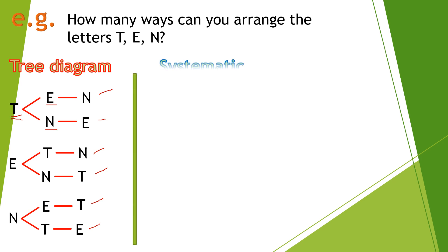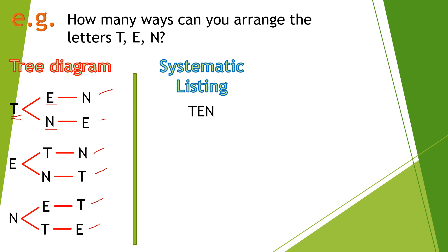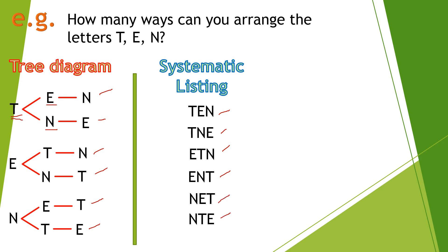Aside from the tree diagram, we can also use systematic listing, wherein we list down all possible arrangements of T, E, N. So we can have TEN, TNE, ETN, ENT, NET, or NTE. Upon counting, the number of possible arrangements is 6. Same as with the tree diagram, we arrive at 6 possible ways.